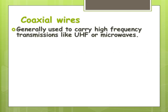Coaxial cables generally carry high frequency transmissions like UHF or microwaves. Basically, it consists of the wire that carries the signal in the center, thick insulation around that, and then a grounded conductor like mesh that goes around that, which helps protect it against interference.